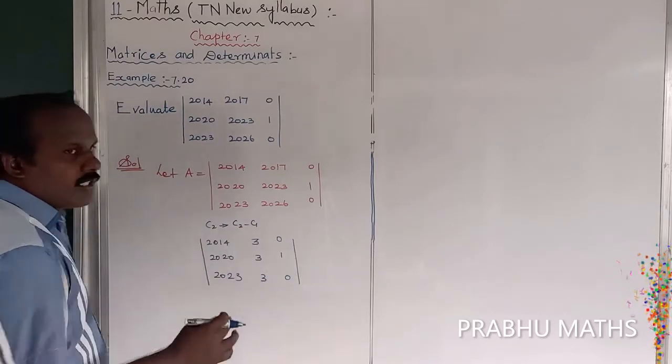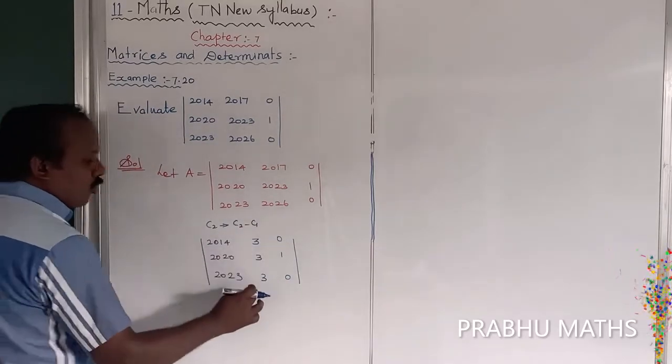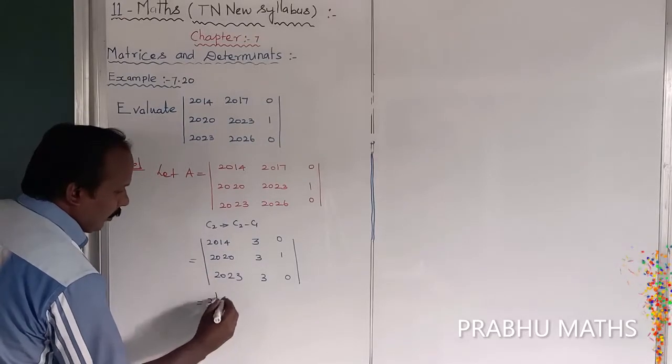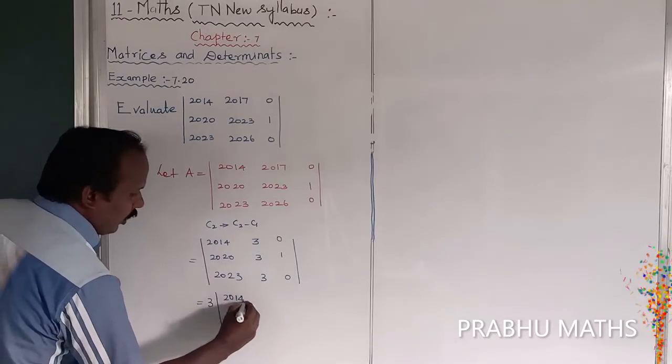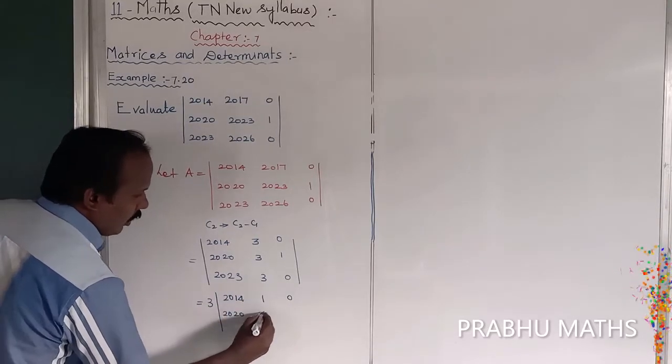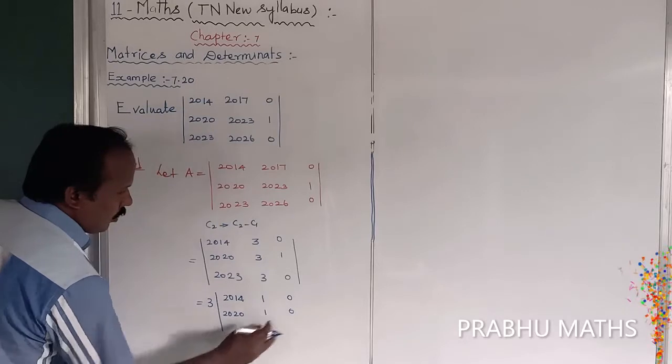The common value of C2 is going to 3, only the common value. So it is equal to 3 is a common value, and 2014, 1, 0; next 2020, 1, 0; next this one is 1.